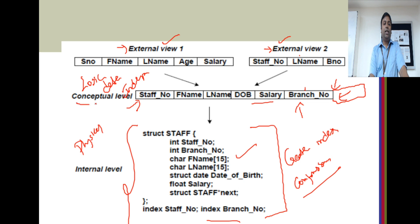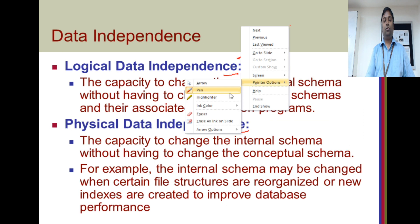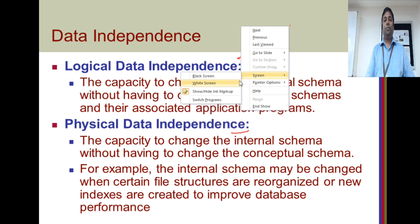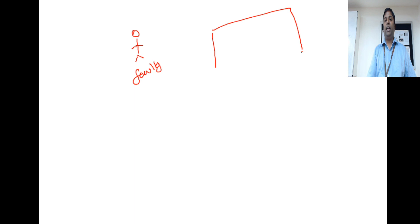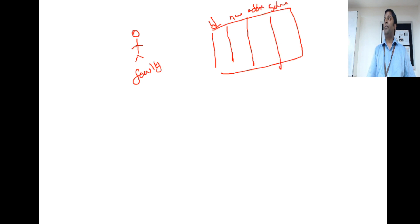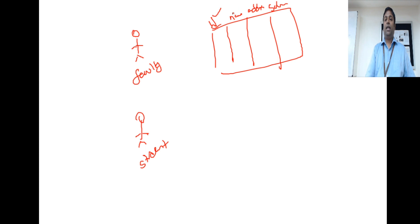Let us take a demo of this. There is one user — he is the faculty himself, say Satish — who is creating the faculty table with ID, name, address, and salary. Then we will have a student as another user. This user should be able to view only the ID and name of the faculty, not his address or salary. So, there should be an external view generated that has only ID and name.